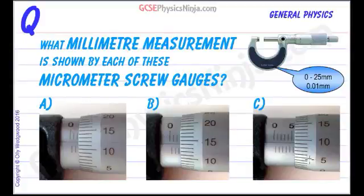A micrometer screw gauge can measure very small objects such as the thickness of a human hair. This is what one looks like. It's made up of five parts.